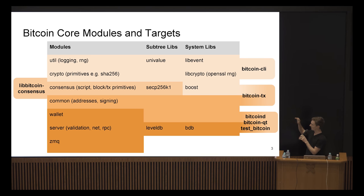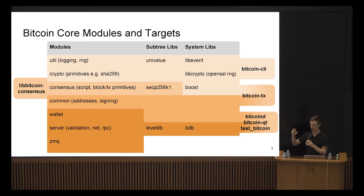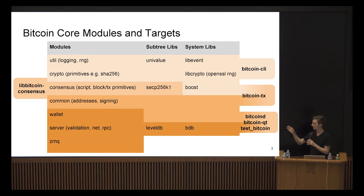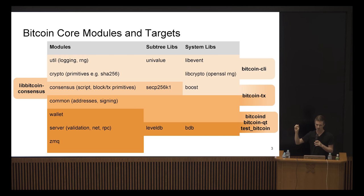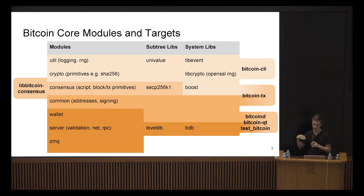Looking at all the modules and targets our build system supports — James was talking about regions, and in the build system they're called modules. There are some basic modules like 'util' which takes care of logging or random number generation, or crypto primitives which provide hash functions. We have bitcoin-cli, which is one build target to provide a utility command line interface to speak with a Bitcoin server.